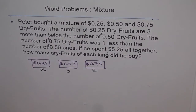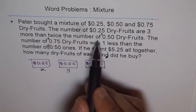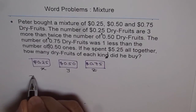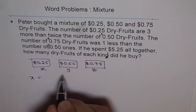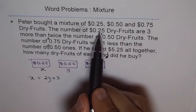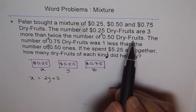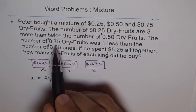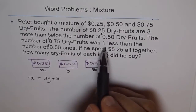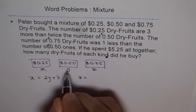The number of 25 cents dry fruits are three more than twice the number of 50 cents dry fruits. So we get our first equation: X equals three plus twice Y, that is X = 2Y + 3. The number of 75 cents dry fruits was one less than the number of 50 cents ones, so Z = Y minus 1.